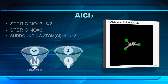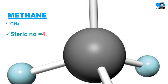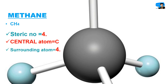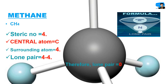Next example is methane, CH4. Methane has steric number 4. The central atom in methane is carbon. Surrounding atoms are 4 hydrogen atoms, so n equals 4. By the formula: steric number minus n = 4 minus 4 equals 0. Hence lone pairs are absent in methane.